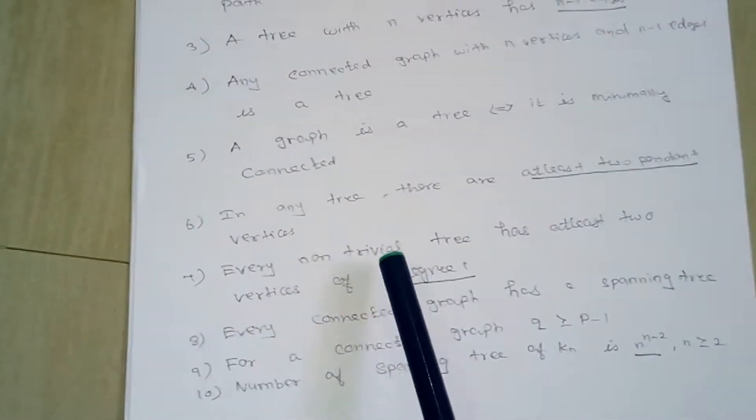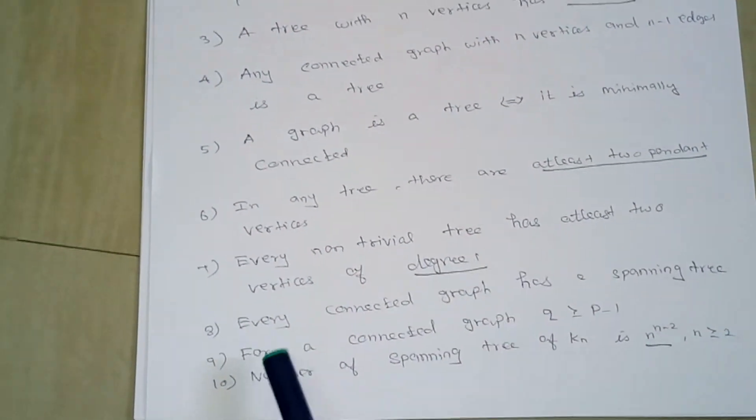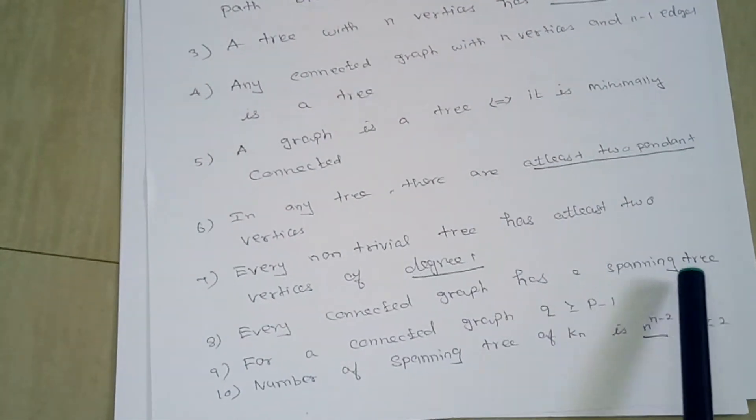Every non-trivial tree has at least two vertices of degree 1. Every connected graph has a spanning tree.